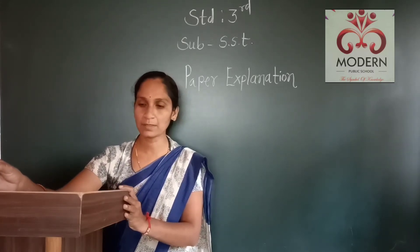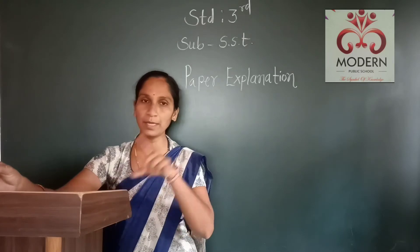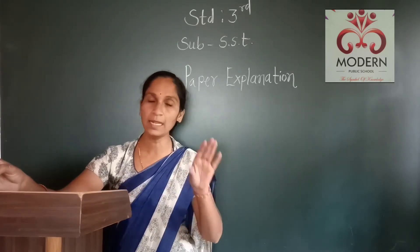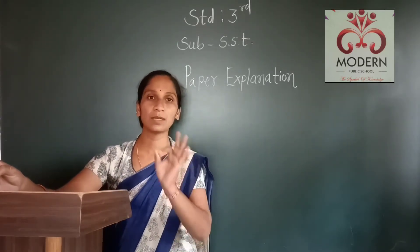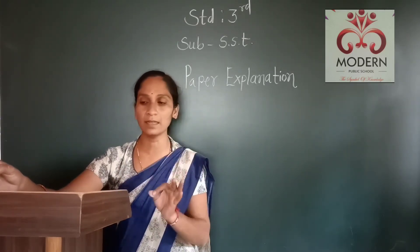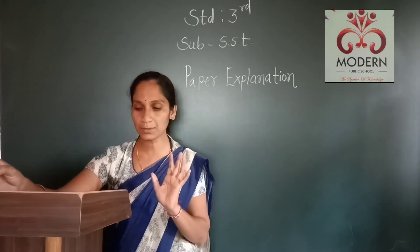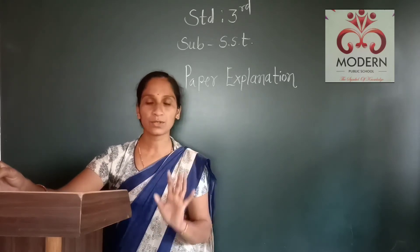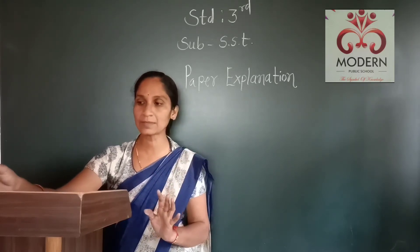Question B: match the pairs — Column A and Column B. You have to read it and match the correct number and option in the middle column. Okay students, question number C: fill in the blanks.